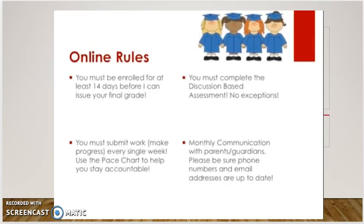You will be given a pace chart, which is also located on your course home page, to help you stay accountable. This will be monitored very closely. If you do get behind pace, I will reach out to give you some encouraging words to keep you moving, but it could ultimately result in a withdrawal if you do not stay on pace. You must also complete the Discussion-Based Assessment — no exceptions. That is required to issue the credit for the course.